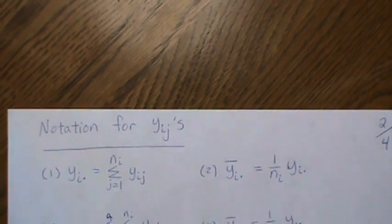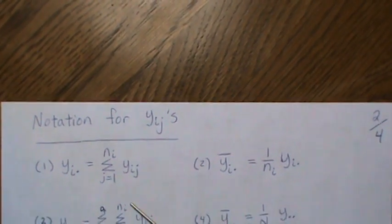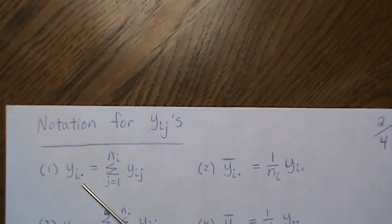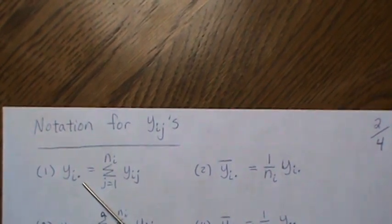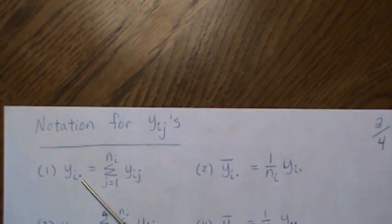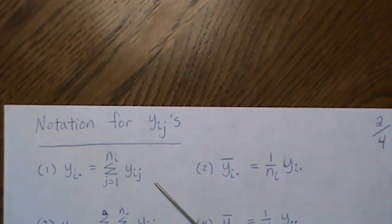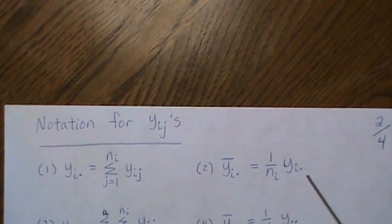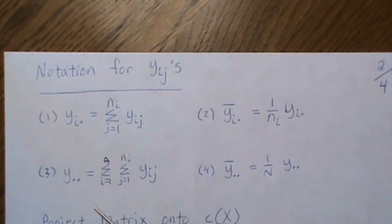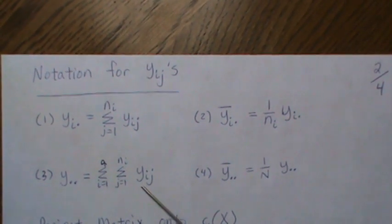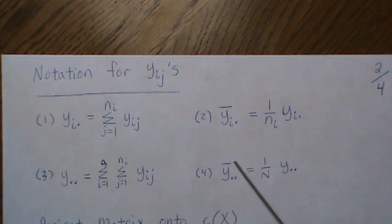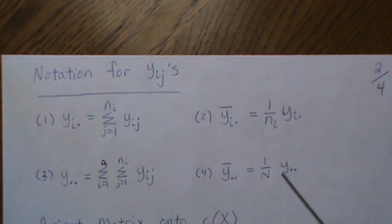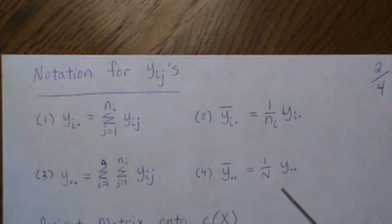Some notation: a dot subscript means sum over that index, so Y_i· means we sum over the j's, and Ȳ_i· is the sample mean for group i. Y_·· means sum over both indices, and Ȳ_·· (with a bar) is the grand mean — add up all your data and divide by N.